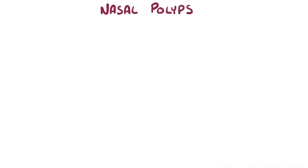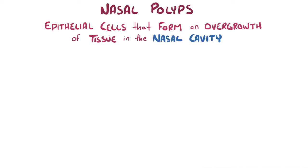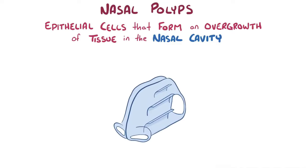A nasal polyp is a clump of epithelial cells that forms a small bump or overgrowth of tissue along the lining of the nasal cavity, which is the inside of the nose.